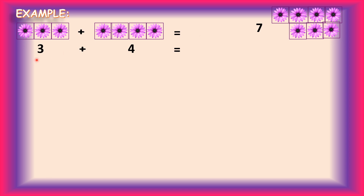The numbers that we add together, we call them add-ins. And the result or the answer we get, we call it total or sum. Add-ins can be two or more than two. Addition can be written vertically and horizontally.